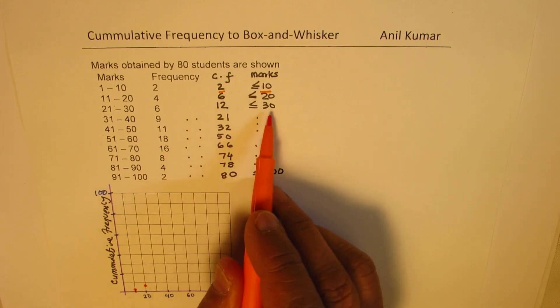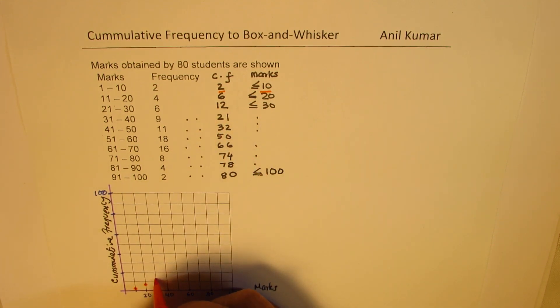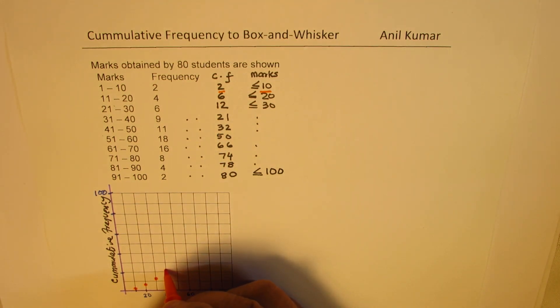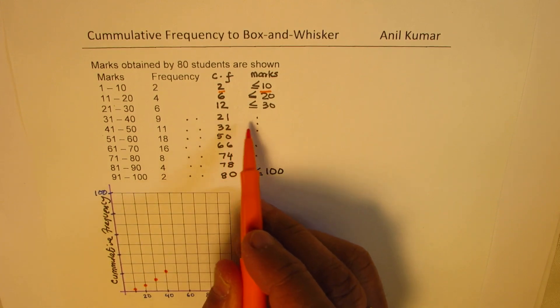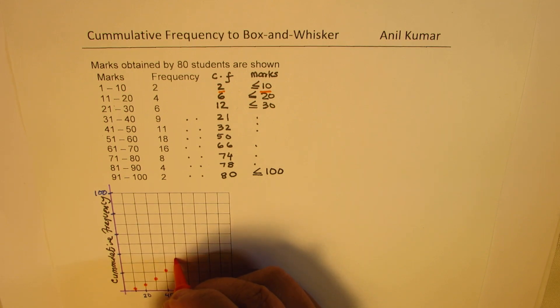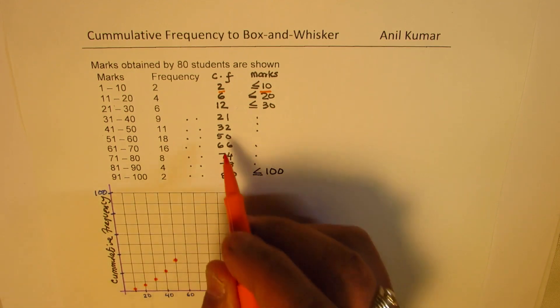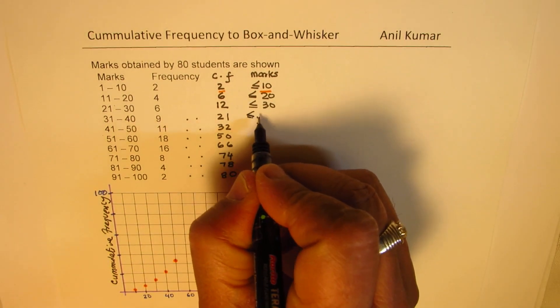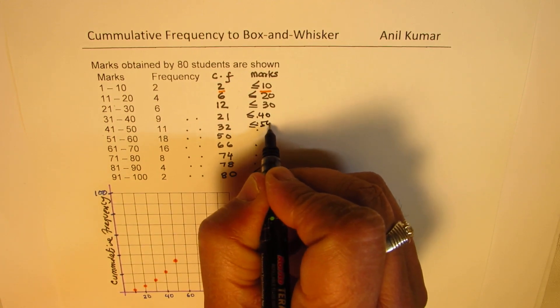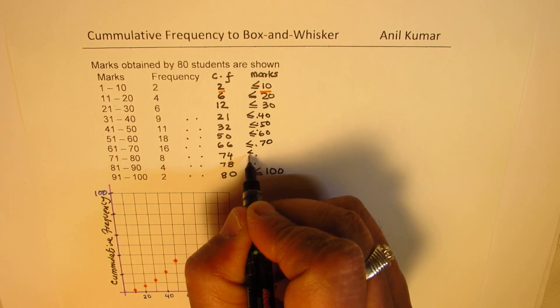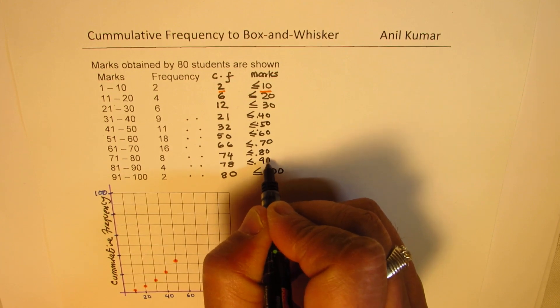Then, we have 12 for 30. So, for 30, we have slightly more than 10. So, 12. For 40, we have 21. So, for 40, we have 21. For 50, we have 32. So, for 50, we have 10, 20, 32. Then, for, it's better to write. Okay, let me just fill this up. It'll be better.